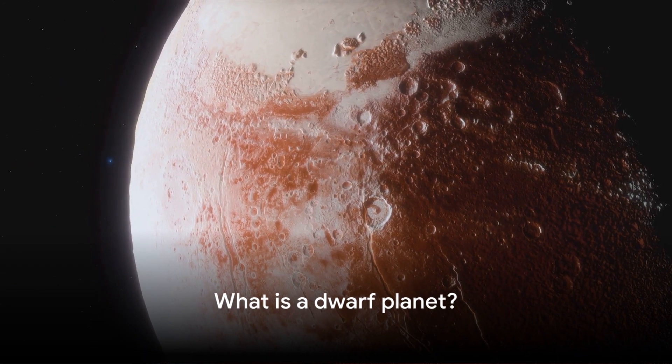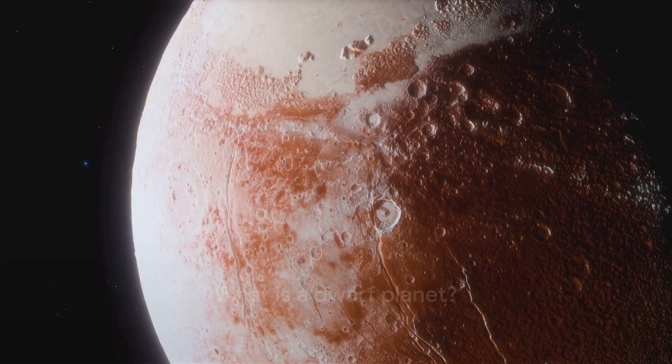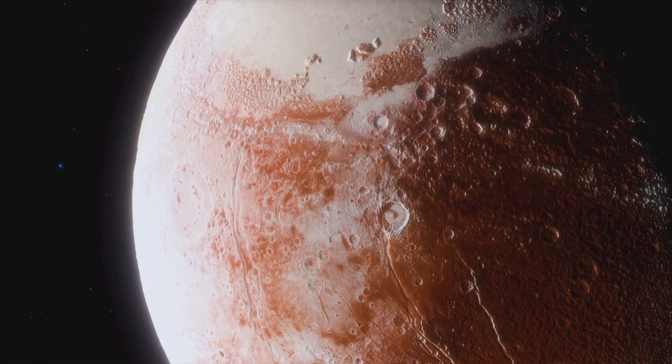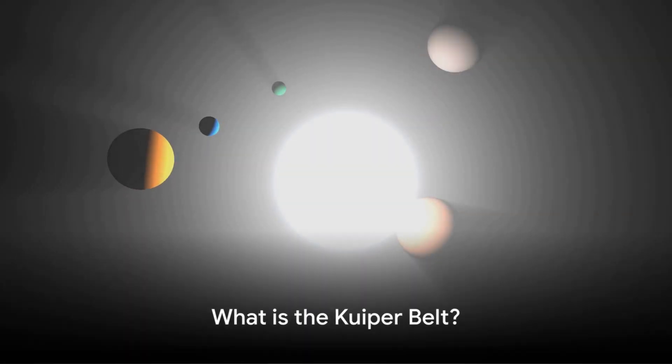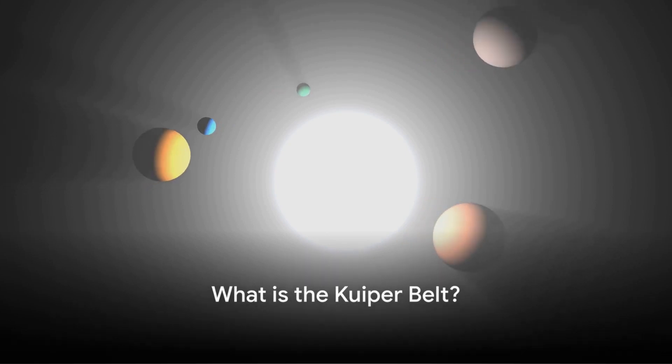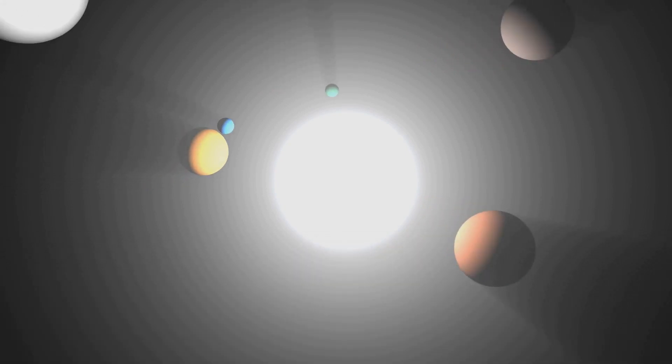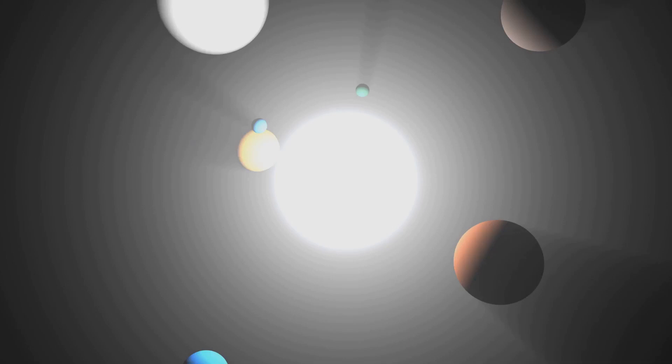A dwarf planet is a celestial body that orbits the sun and is spherical in shape, but has not cleared its orbit of other debris. Pluto is an example of a dwarf planet. The Kuiper belt is a region of the solar system beyond the orbit of Neptune. It is home to many icy objects including Pluto and other dwarf planets.